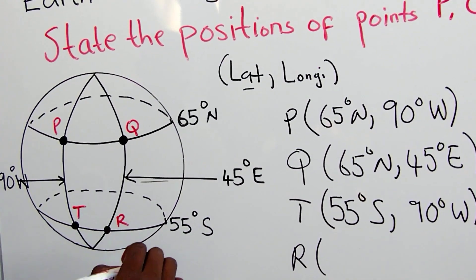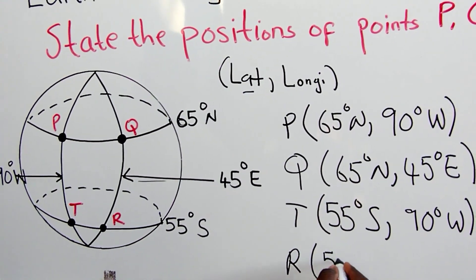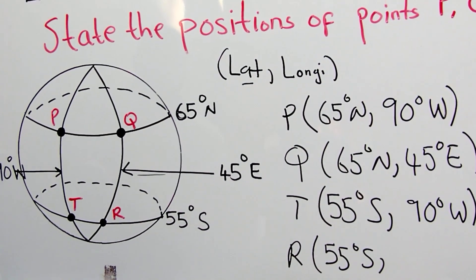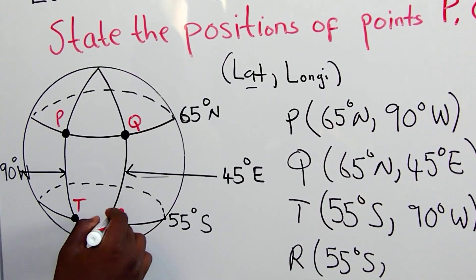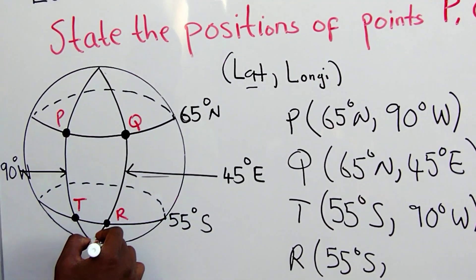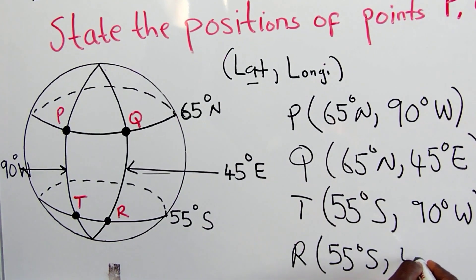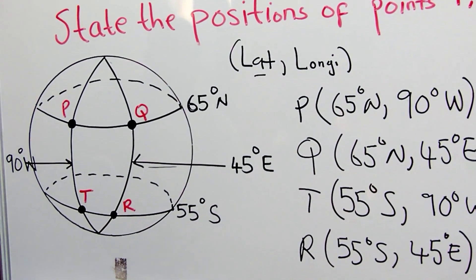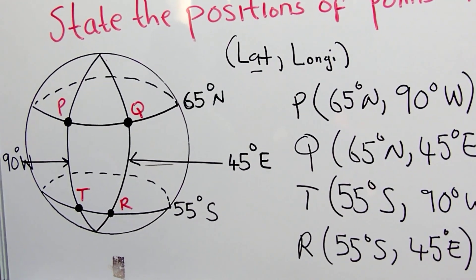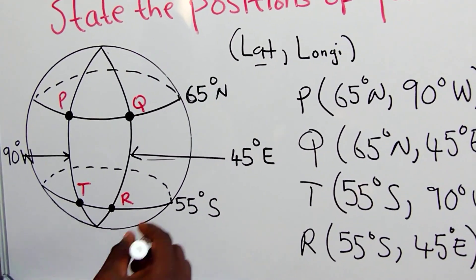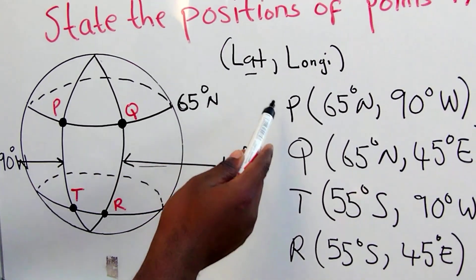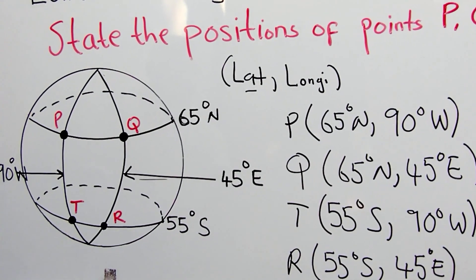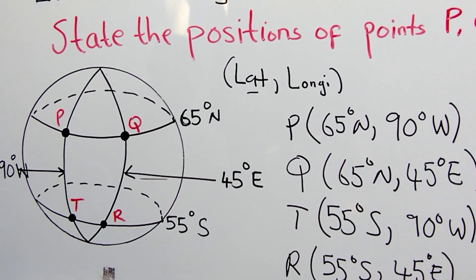For point R, T and R lie on the same latitude, which is 55 degrees South. The longitude for R is 45 degrees East. So the position of point R is (55°S, 45°E). That is how you state the positions of points P, Q, T, and R. Don't forget to subscribe to my YouTube channel — thank you.